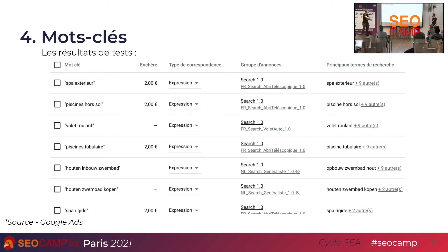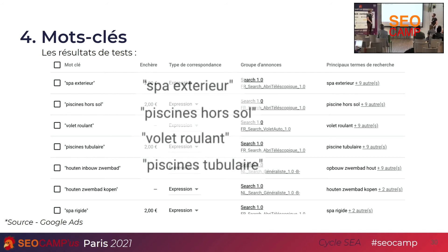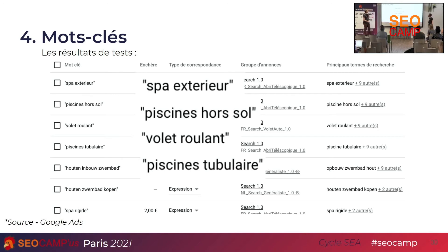On a été voir les recommandations que Google nous fait au niveau des mots-clés — toujours dans les recommandations sur Google Ads, pas dans le planificateur. Il analyse notre client — ici, c'est un client qui fait des abris pour piscines — et voici les mots-clés qu'il va nous proposer : les spas, les constructeurs de piscines, les volets roulants (rien à voir avec la piscine), et les piscines tubulaires qui sont les piscines gonflables. On voit que si on applique simplement les conseils de Google, on va se retrouver avec une foule de mots-clés qui ne sont pas du tout pertinents.